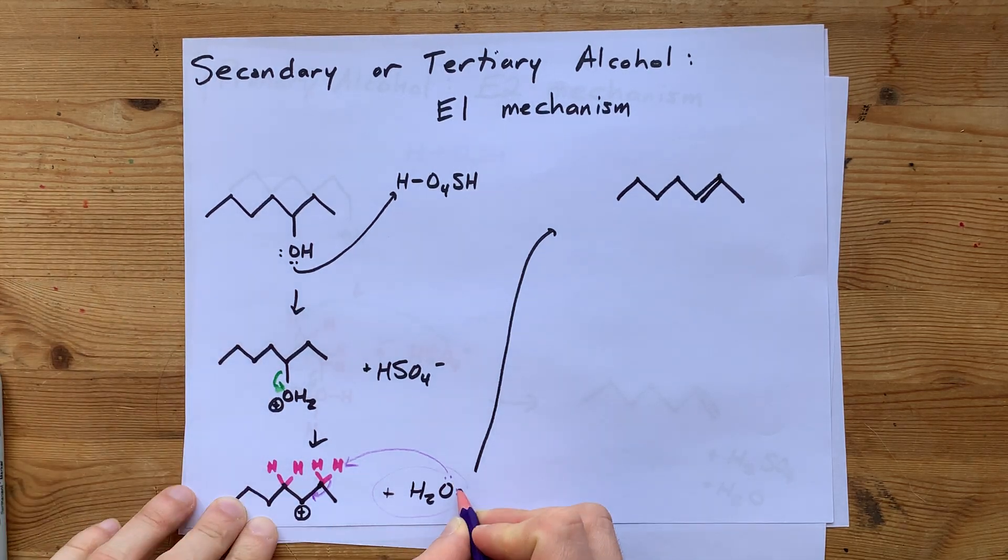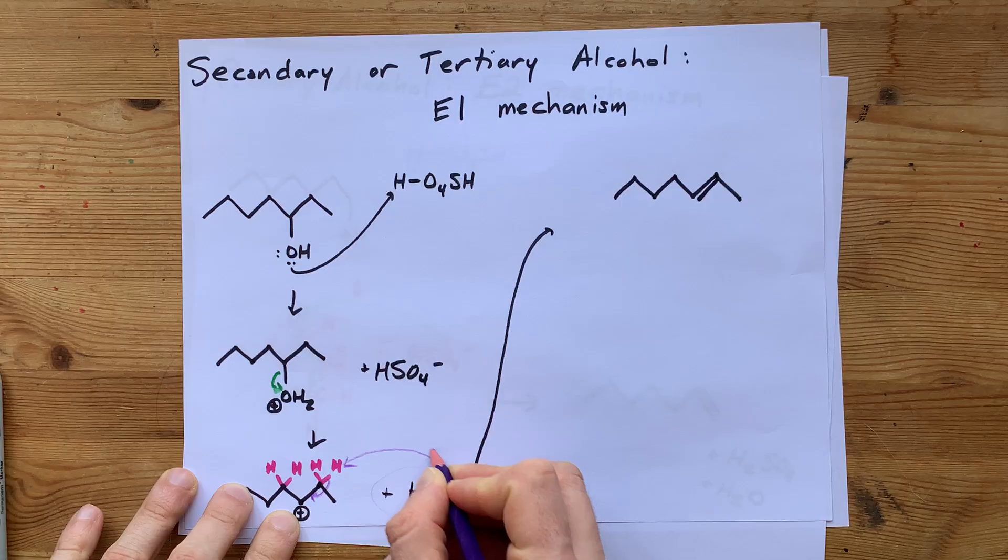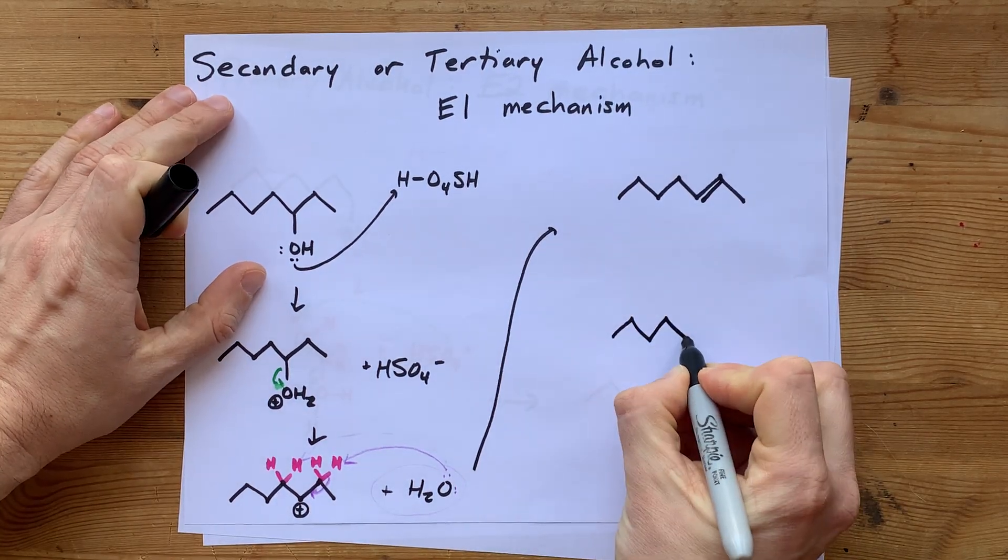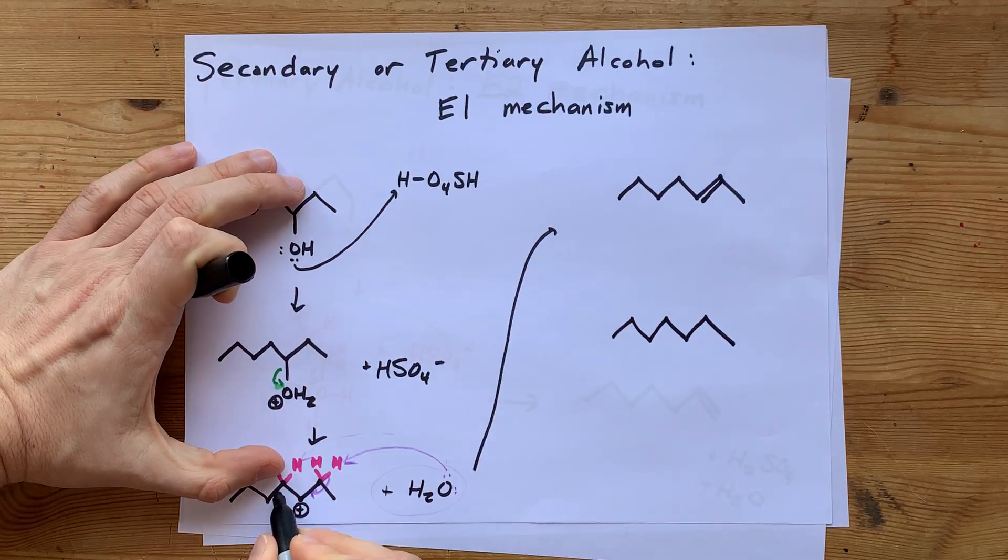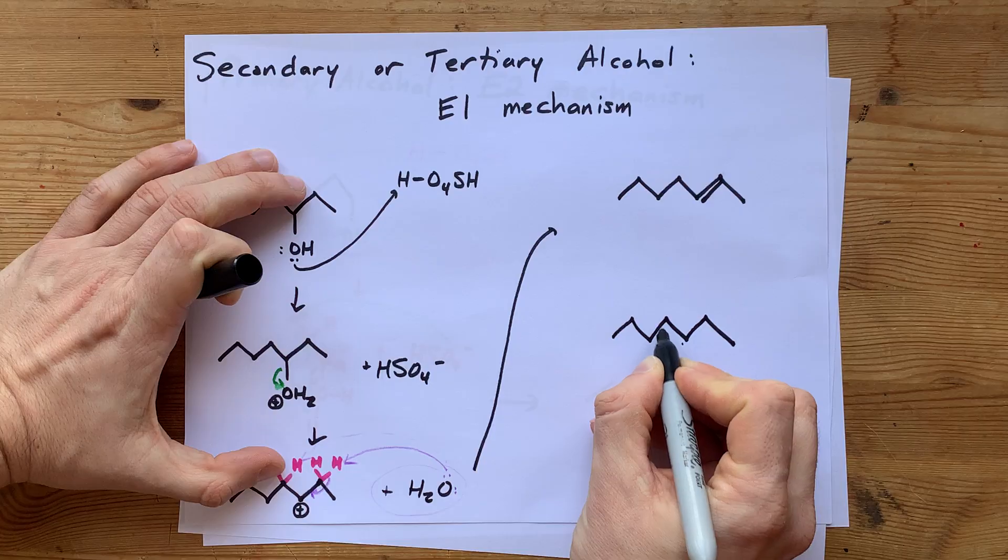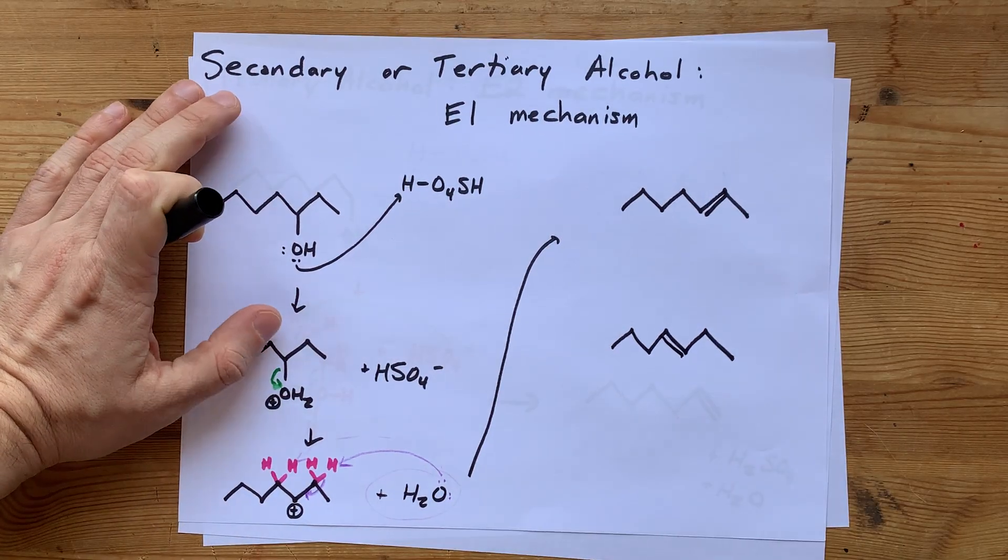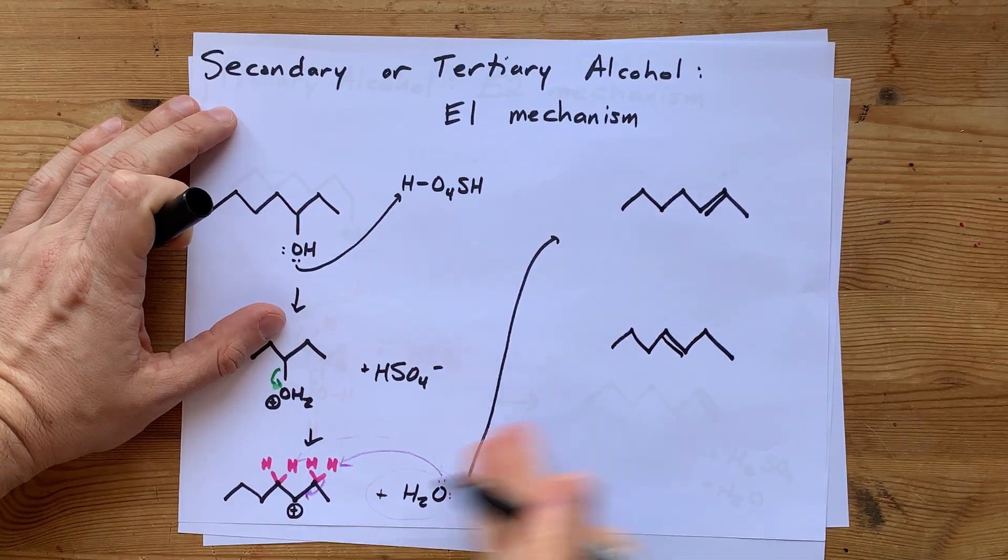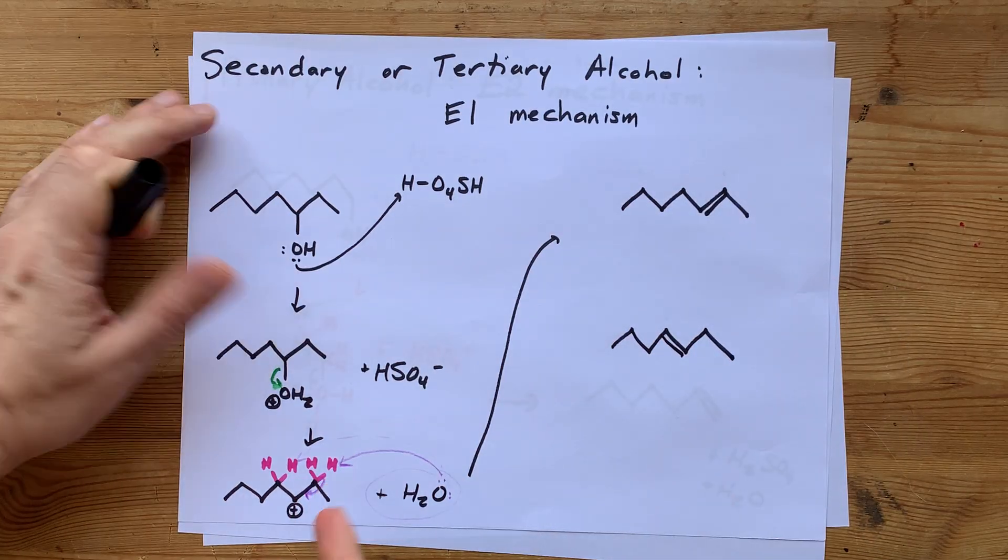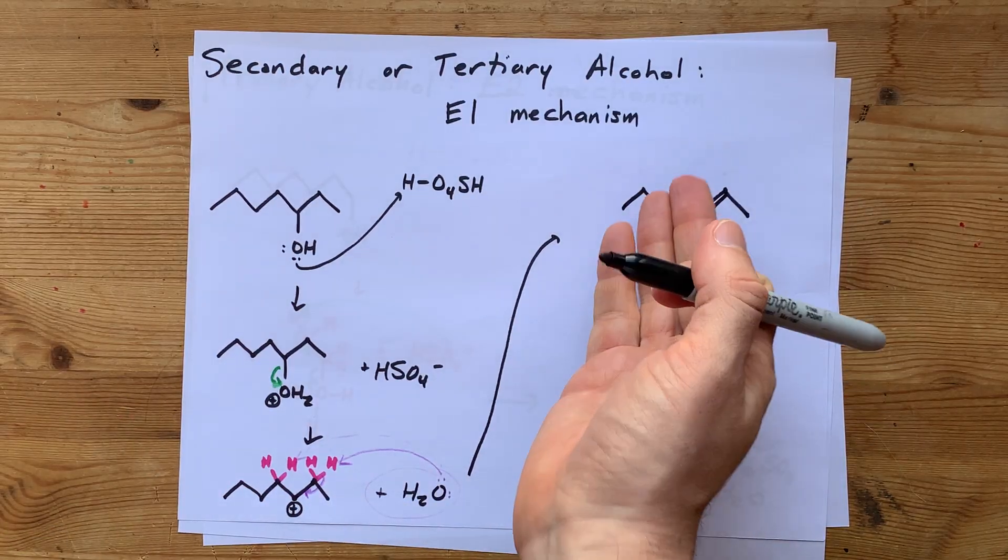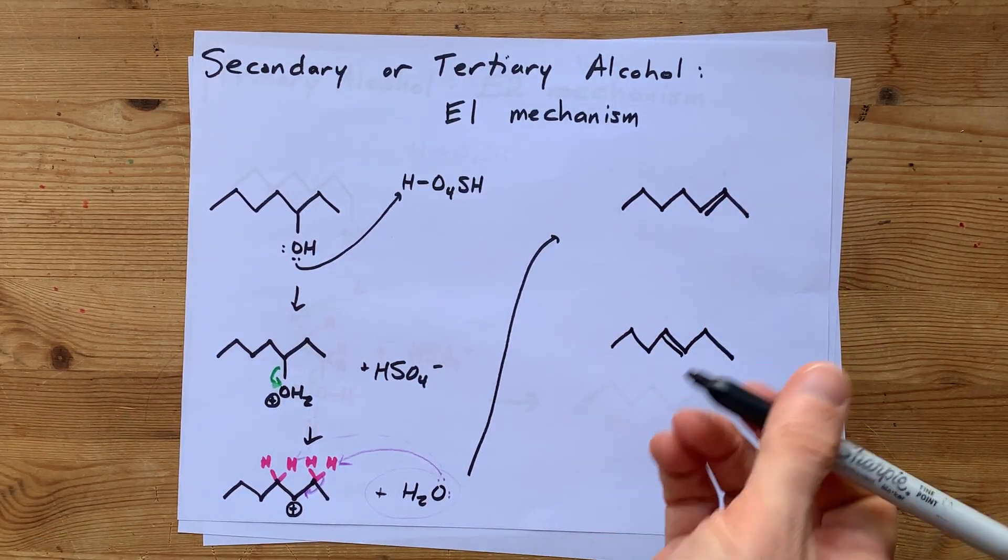Okay, you could just as easily have had the water pluck off one of these hydrogens. In that case, you would have ended up with your double bond between these two carbons, the carbon that had the positive charge and the carbon you pluck the hydrogen off of. And again, I'm going to draw that as trans. Now, because you have hydrogens on both of the carbons on either side of the carbocation, I could imagine both of these products getting made.